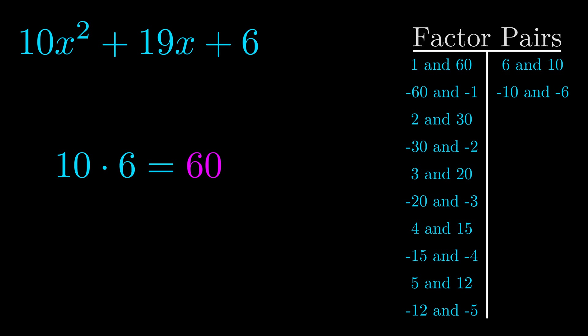The b value is the coefficient on the x term. That's the middle term, the one that we haven't done anything with yet. And really this is the only factor pair that we need.